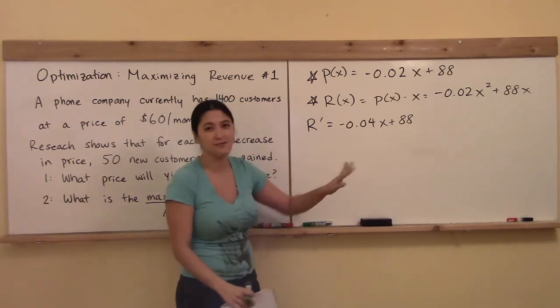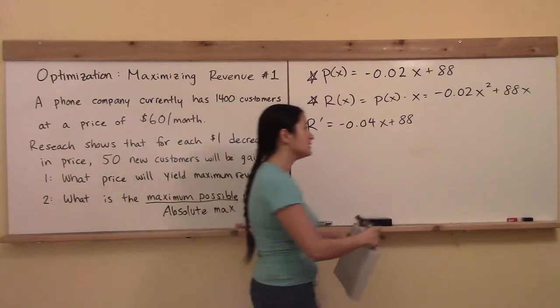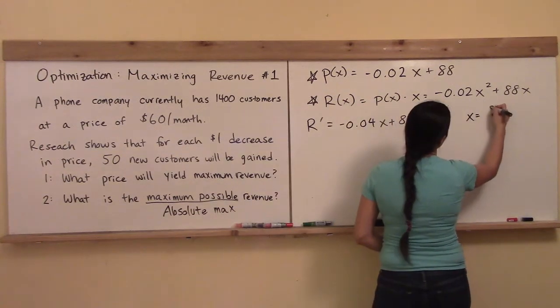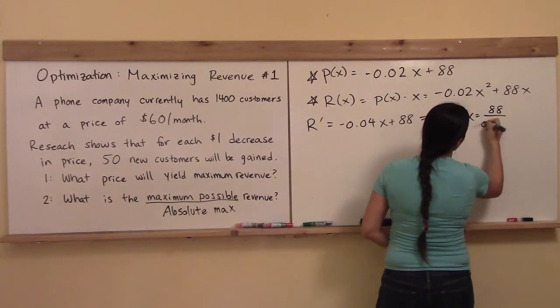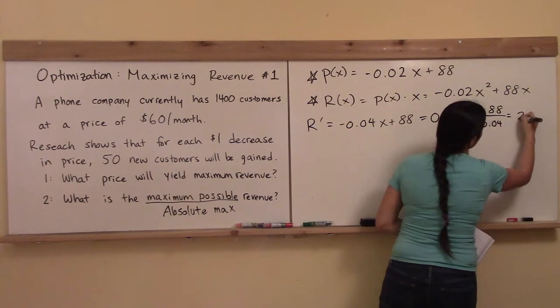and usually we would set this either equal to 0 or does not exist, but remember what kind of function we have? Polynomial, right? So then we don't have to worry about it not existing. Polynomials always exist, so we only have to set it equal to 0,